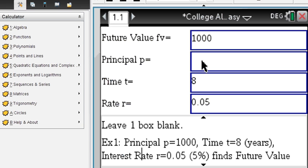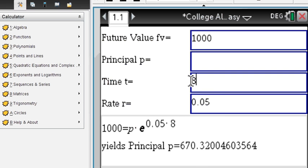So say we want to figure out the principle. We leave it blank and I enter a time, a rate, and a future value. And you can see the setup of the exponential equation. And then solving for the principle would give us 670.